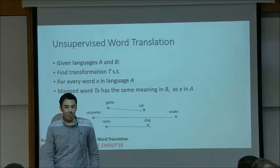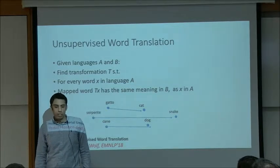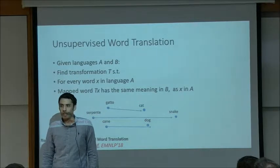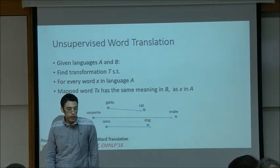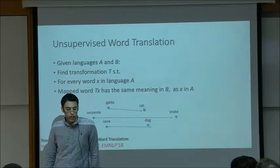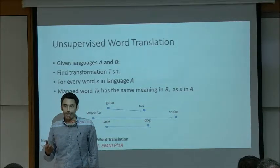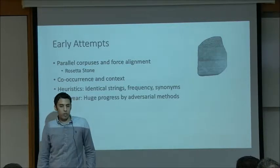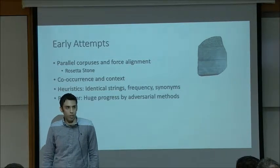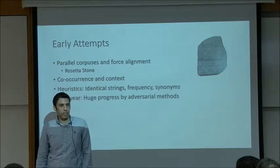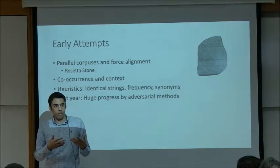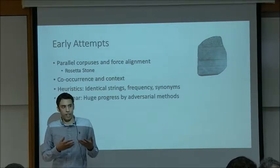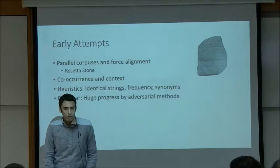The first work I want to speak about is unsupervised word translation, joint work with Leo Wolf presented at EMNLP. The task is: given languages A and B, find a transformation such that for every word in one language, the transformed word has the same meaning in the other language. This is not a new task — it's been around for centuries. Early attempts used parallel text between the two languages, force-aligning them to get a dictionary, for example using the Rosetta Stone.